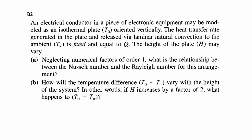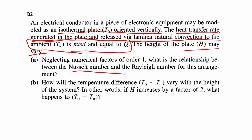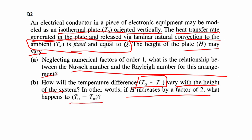Problem 2: An electrical conductor in a piece of electronic equipment may be modeled as an isothermal plate oriented vertically. The heat transfer rate generated in the plate and released via natural convection equals q. The ambient is a large reservoir at temperature T∞. The height of the plate h may vary. Neglecting numerical factors of order one, what is the relationship between Nusselt number and Rayleigh number, and how will the temperature difference (T₀ − T∞) vary with height? Specifically, if h increases by a factor of two, what happens to T₀ − T∞?